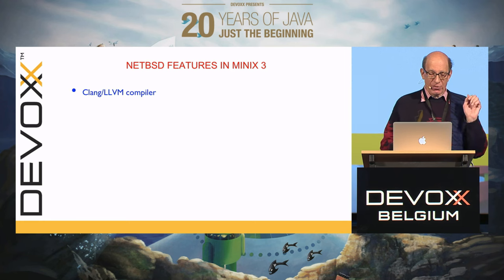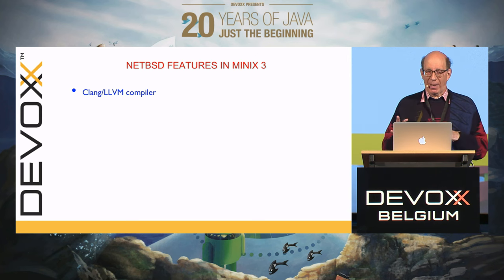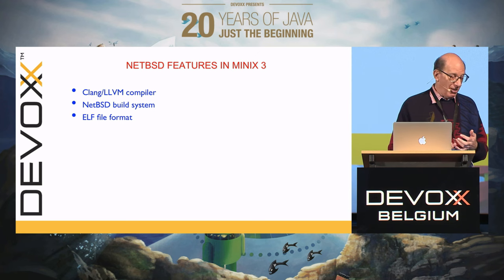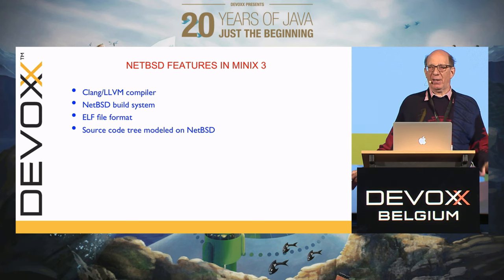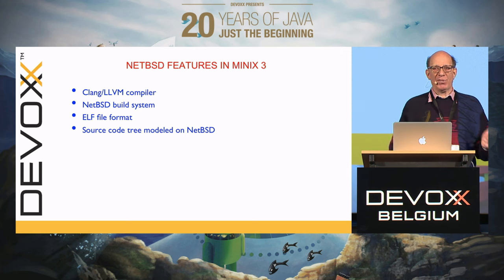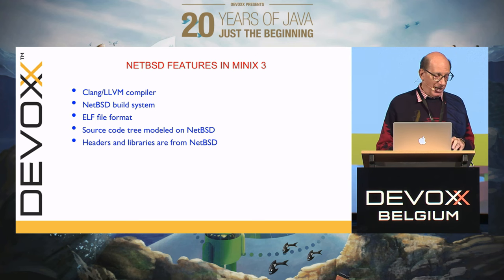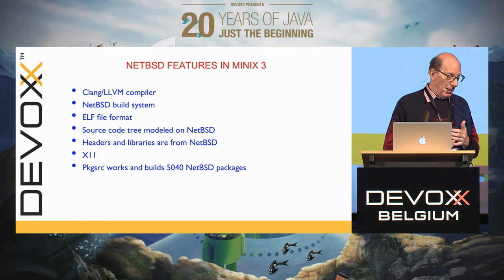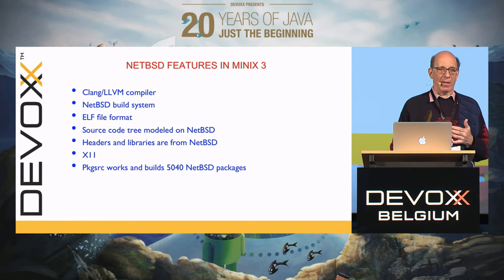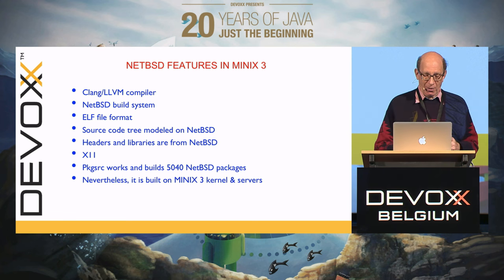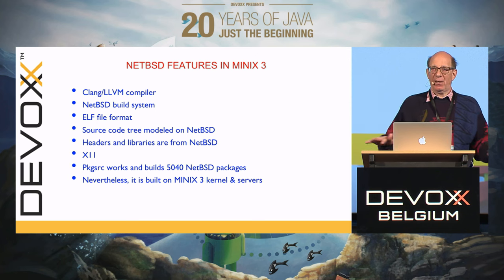Some NetBSD features in MINIX: we use the Clang LLVM compiler, which is a very nice programmable compiler done at the University of Illinois and one of the best compilers around. We use the NetBSD build system, which is very clean because it's got to work on all these different platforms. We use the ELF file format. The source code tree is modeled on the way NetBSD does it. All our headers and libraries are taken from NetBSD. We have X11. Package source works with about 5,000 packages right out of the box.